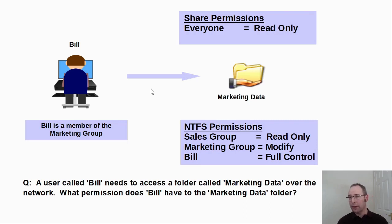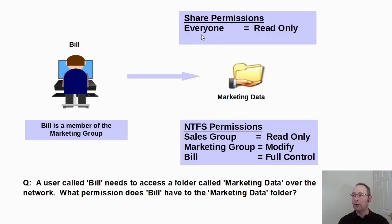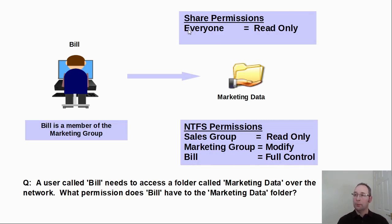However, the important thing to bear in mind here is Bill is accessing the folder not locally but over a network through a network share. Now that means share permissions come into play, and as we can see the everyone group — which Bill is a member of — has read only permissions assigned to it. So what we have here is a real conflict in terms of our permissions. NTFS permissions say Bill has full control but share permissions say that everyone including Bill has read only. So what effective permission does Bill have?